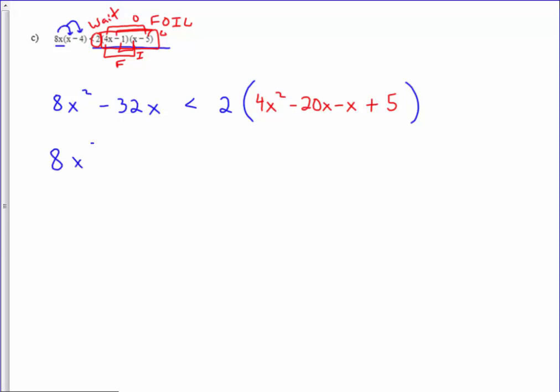I'm going to copy down the left-hand side of the problem. And before I distribute the 2, I'm going to combine like terms that I have on the inside of my parentheses. So I'll have 4x squared minus 21x plus 5.